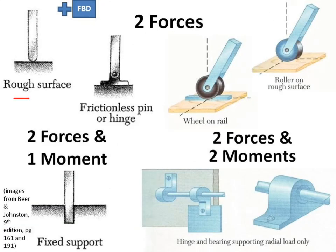When you have a rough surface or a pin, you're going to get two forces. The wheel on the rail gives you two forces. The roller on the rough surface gives you two forces. All of these are two forces. This one gives you two forces and a moment. So does a bearing. Now you should ask yourself which one of these is a thrust bearing or a journal bearing?